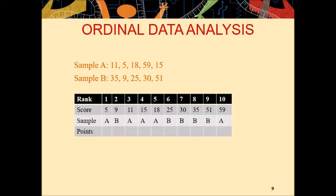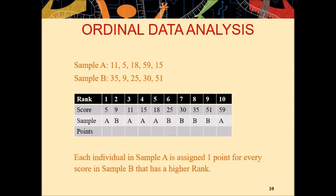Next, you have to assign points to each score. And the principle is, each individual in sample A is assigned one point for every score in sample B that has a higher rank. This is how you will assign the points. For example, using this principle I have already told you, 5 points are assigned to sample A. How? This is the score, 5 belongs to sample A. Go to sample A, just see, this is 5. So, in sample B, 35 has a higher rank than 5, 9 has a higher rank than 5, 25, 30, and 51 have higher ranks than 5. Therefore, you will assign 1, 2, 3, 4, 5 points.